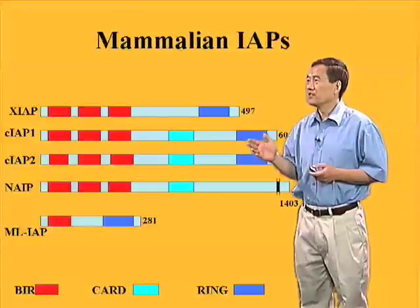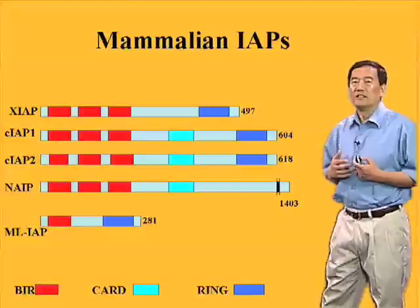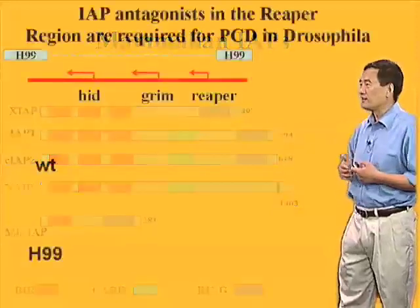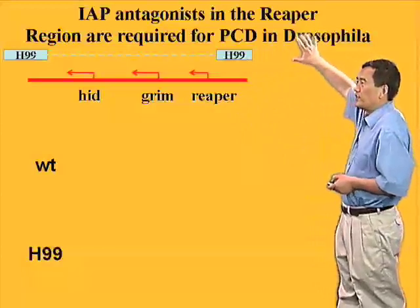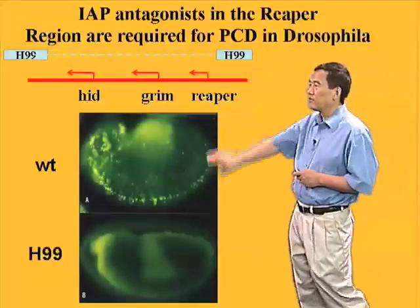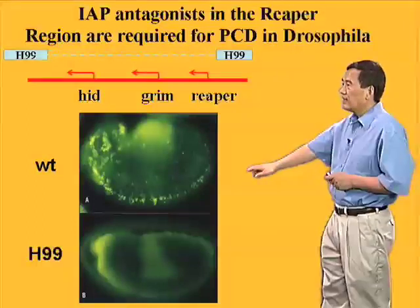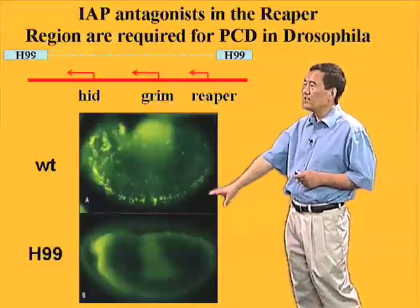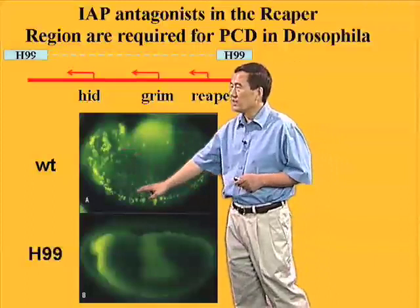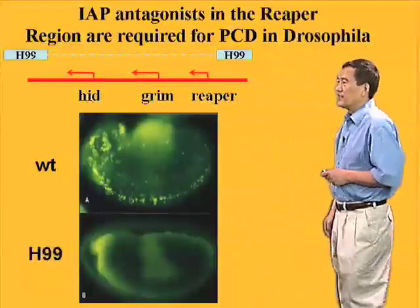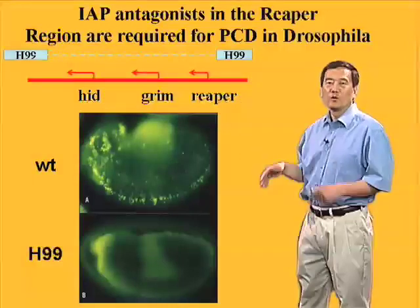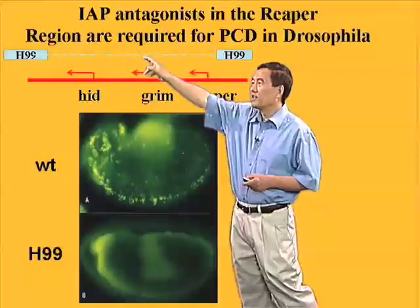The functional understanding and regulation of IAPs actually comes from genetic studies in fruit fly. Herman Steller's group at MIT isolated a mutant fly called H-99. In these mutant fly embryos, when you irradiate them, wild-type flies show massive apoptosis as demonstrated by staining, but in H-99 embryos you don't see this apoptosis, because they are missing apoptosis-inducing proteins that are deleted from the H-99 region.